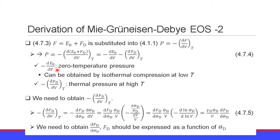So the first term is the zero-temperature pressure. This can be obtained by isothermal compression at low temperature. Therefore, we need to obtain the second term: minus the partial derivative of Fd with respect to V at temperature T, which is the thermal pressure.